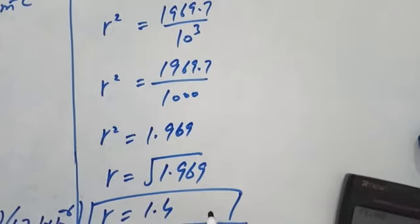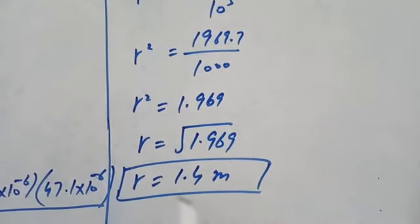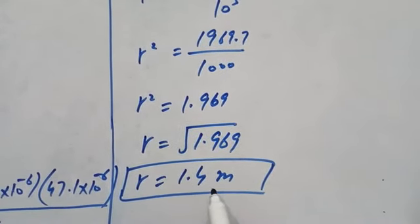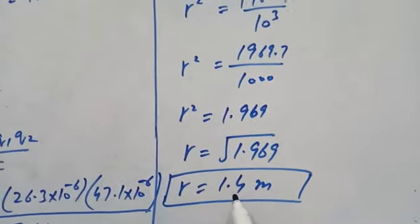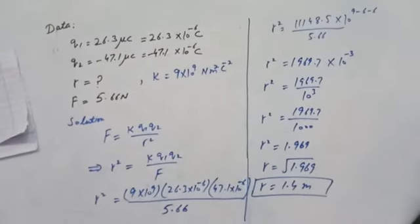The SI unit of distance is meters, so the distance between two point charges is 1.4 meters. This is the required answer of our numerical problem.